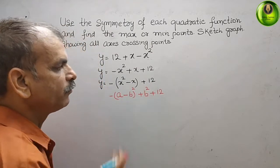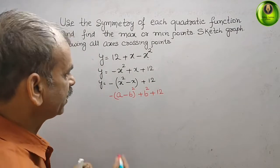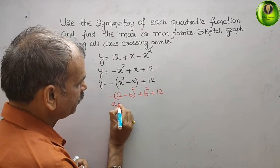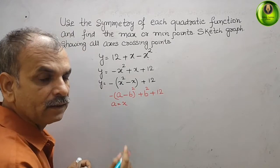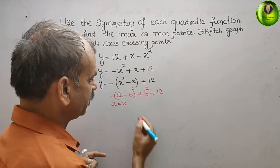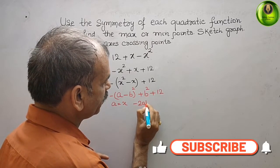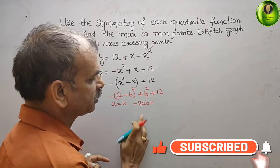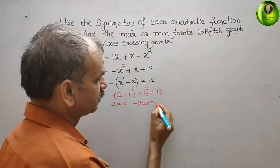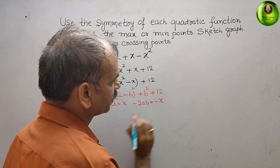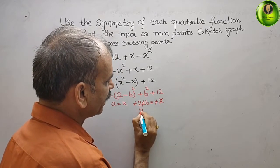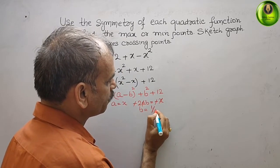In this form, a is equal to x. Now, minus 2ab corresponds to minus x, so minus 2ab equals minus x. Cancelling the minus signs and x, we find that b is equal to 1 by 2.